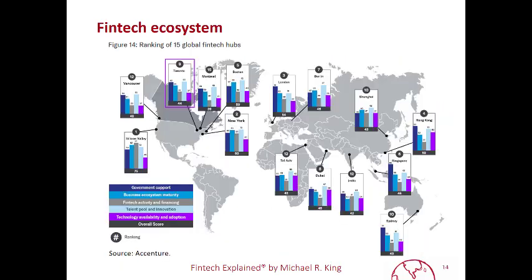Ranking FinTech ecosystems has become a pastime for consultancies and other FinTech companies. In this example taken from Accenture, we can see a ranking of leading cities based on five different dimensions: government support, the business ecosystem, FinTech financing, talent, and technology. They rank Silicon Valley and New York numbers one and two, London number three, and Hong Kong number four.